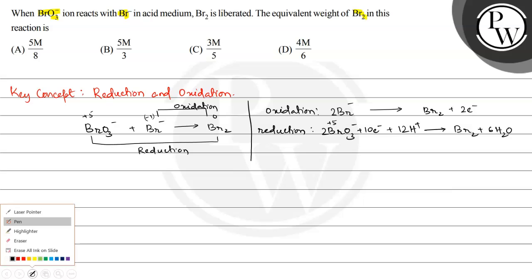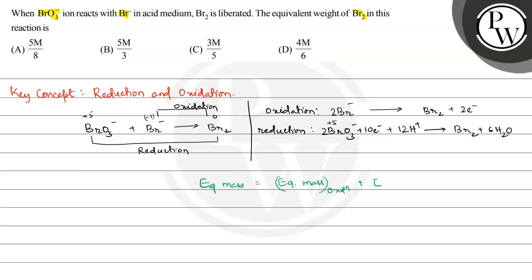Since Bromine is formed in both reactions, the equivalent mass equals equivalent mass from oxidation plus equivalent mass from reduction. Equivalent mass for oxidation is molar mass divided by n-factor of oxidation.